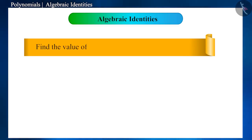Find the value of 98 to the power of 3 using the appropriate identities. You must have seen such questions. How would you solve it?